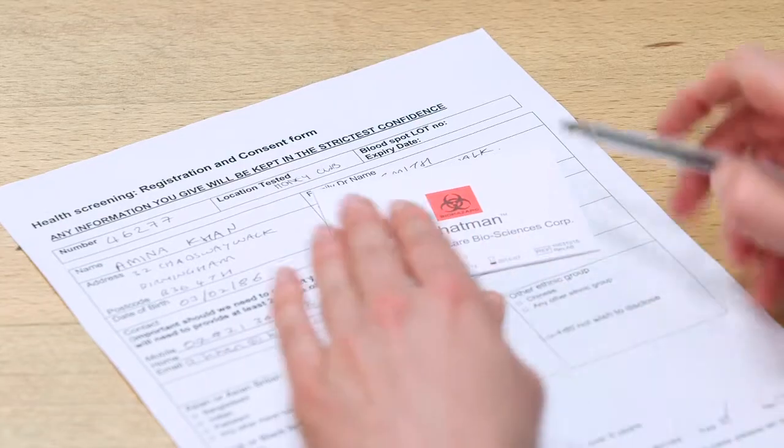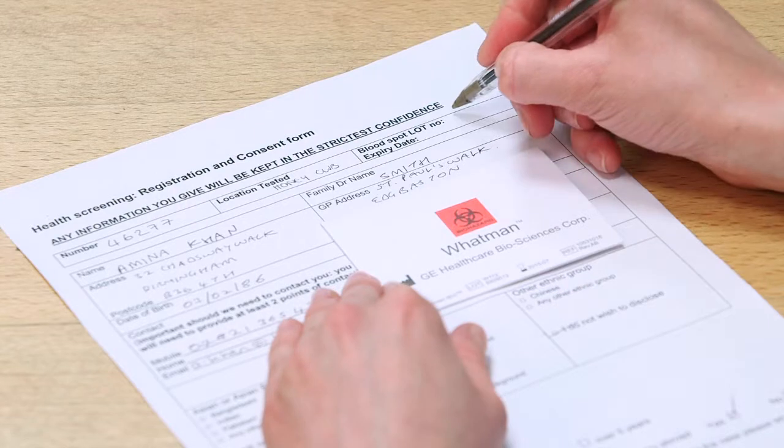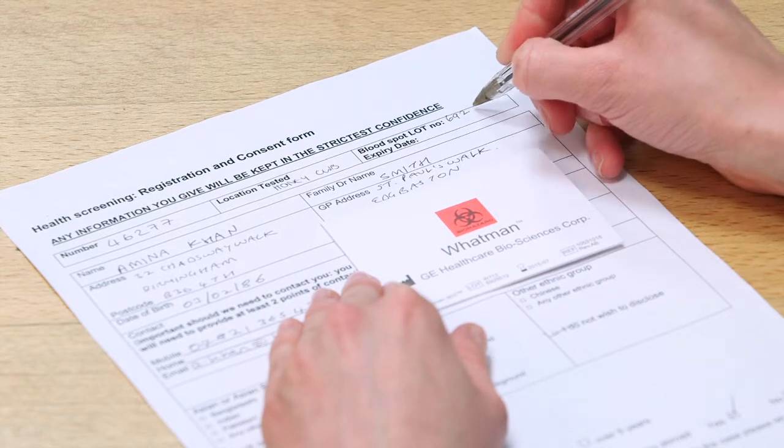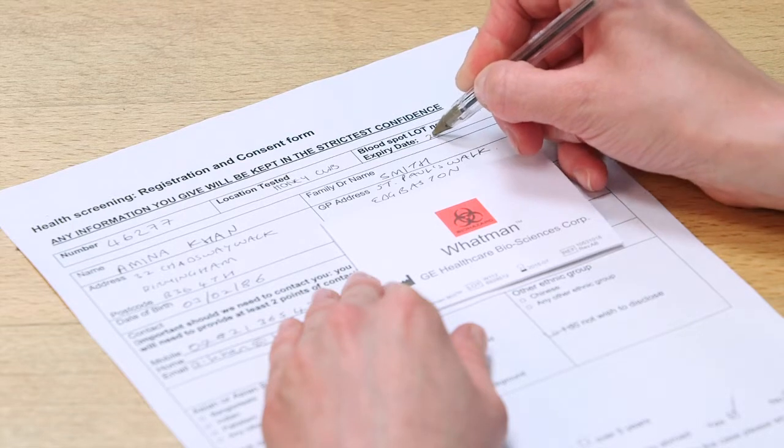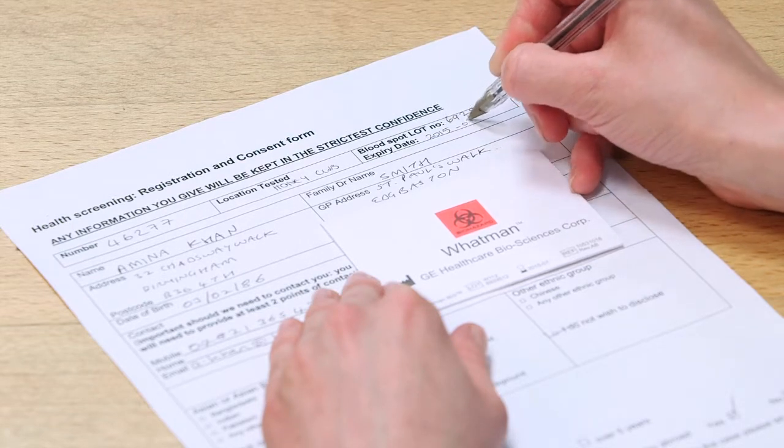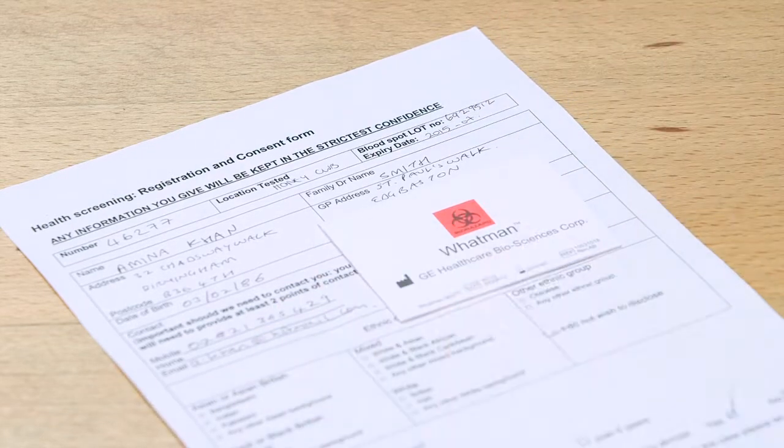The next thing, checking the lot number and the expiry date, and documenting. Okay. Now we are ready to begin. So now we have filled this in, I am going to explain the procedure to you before we start. Okay.